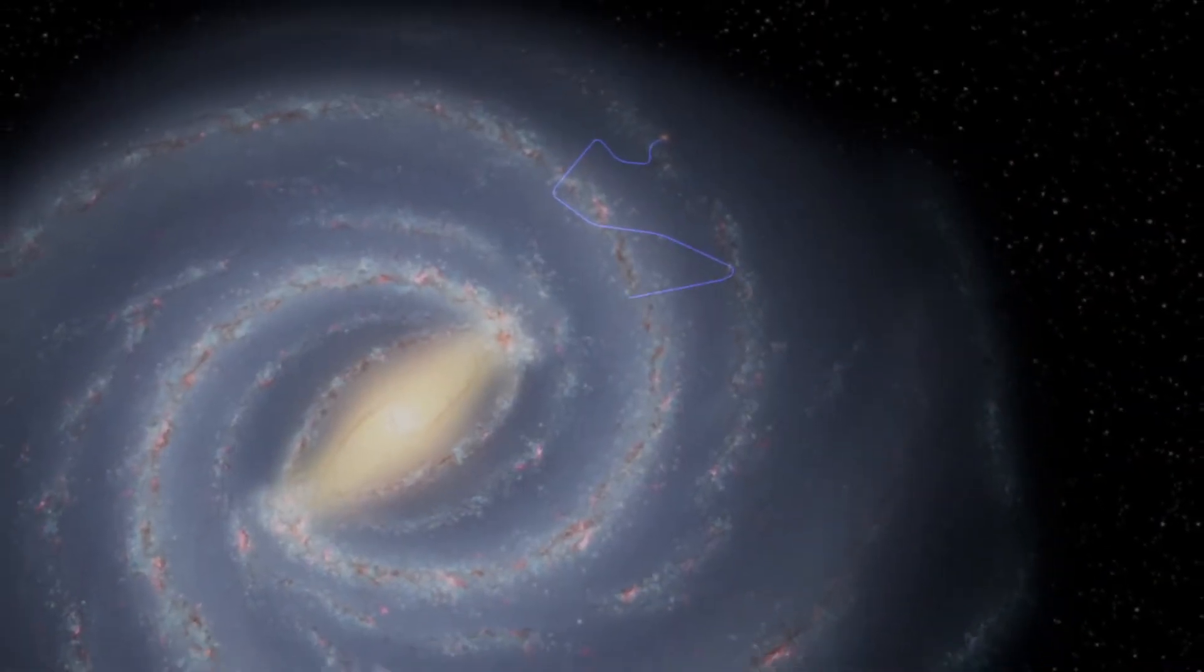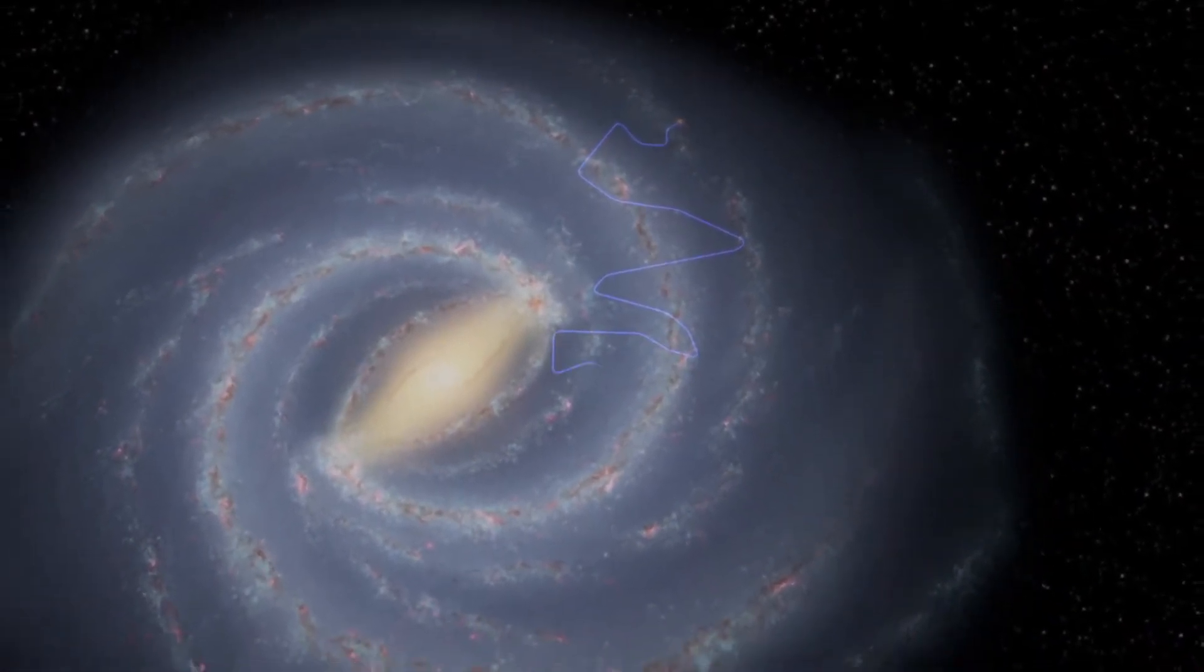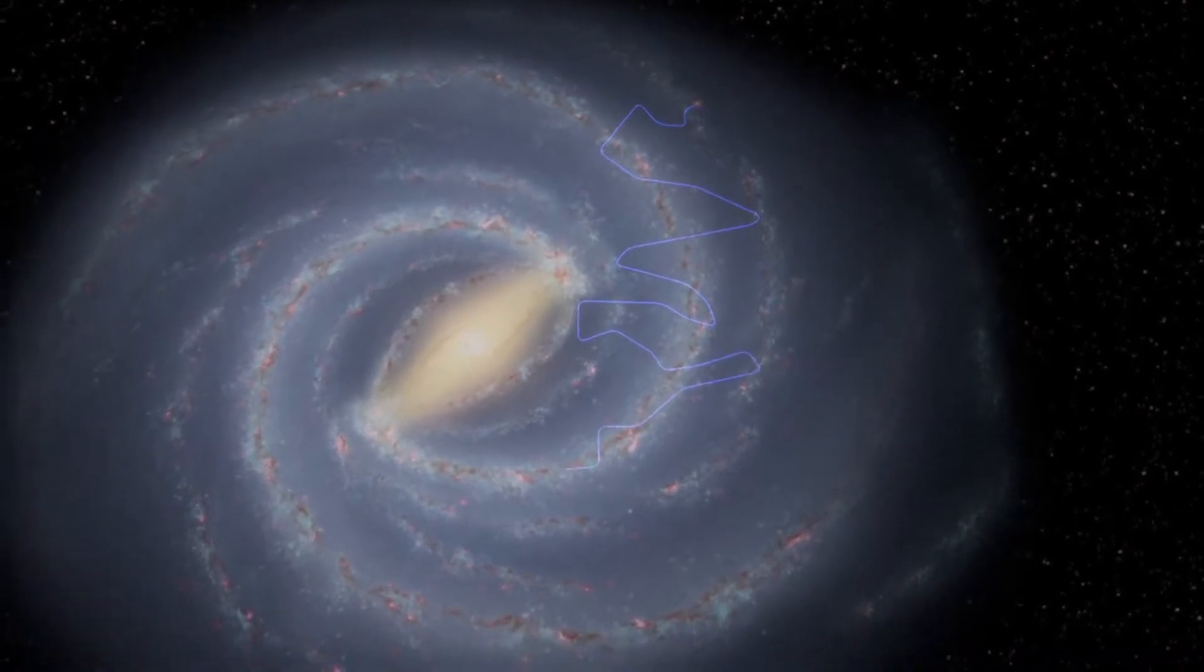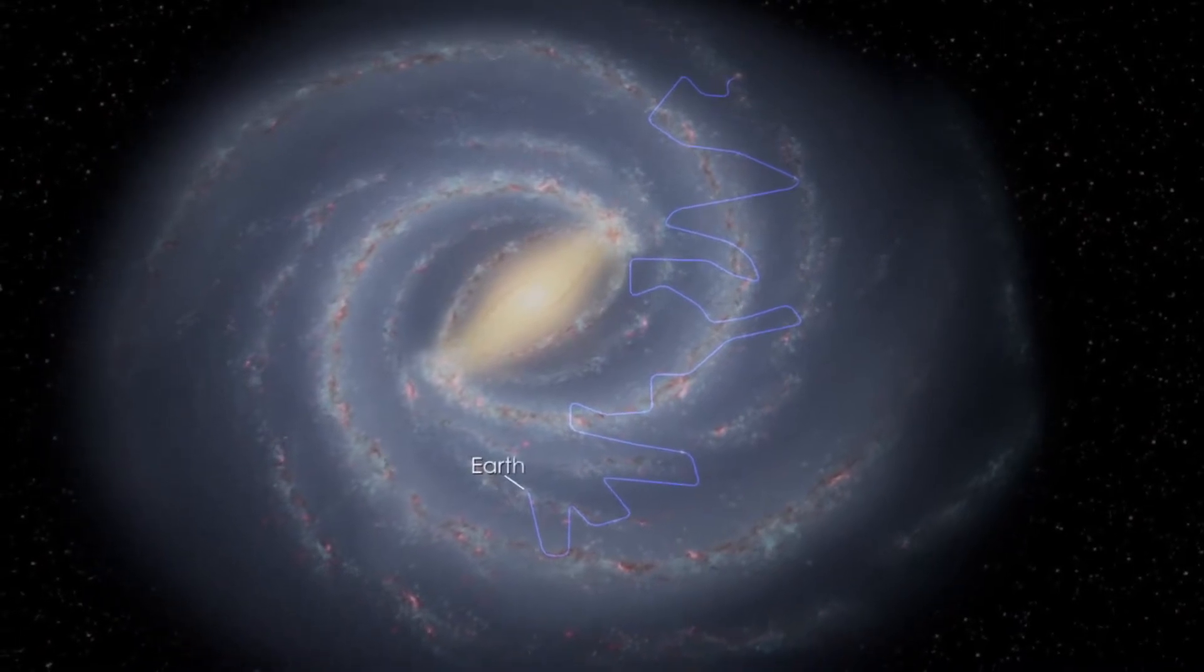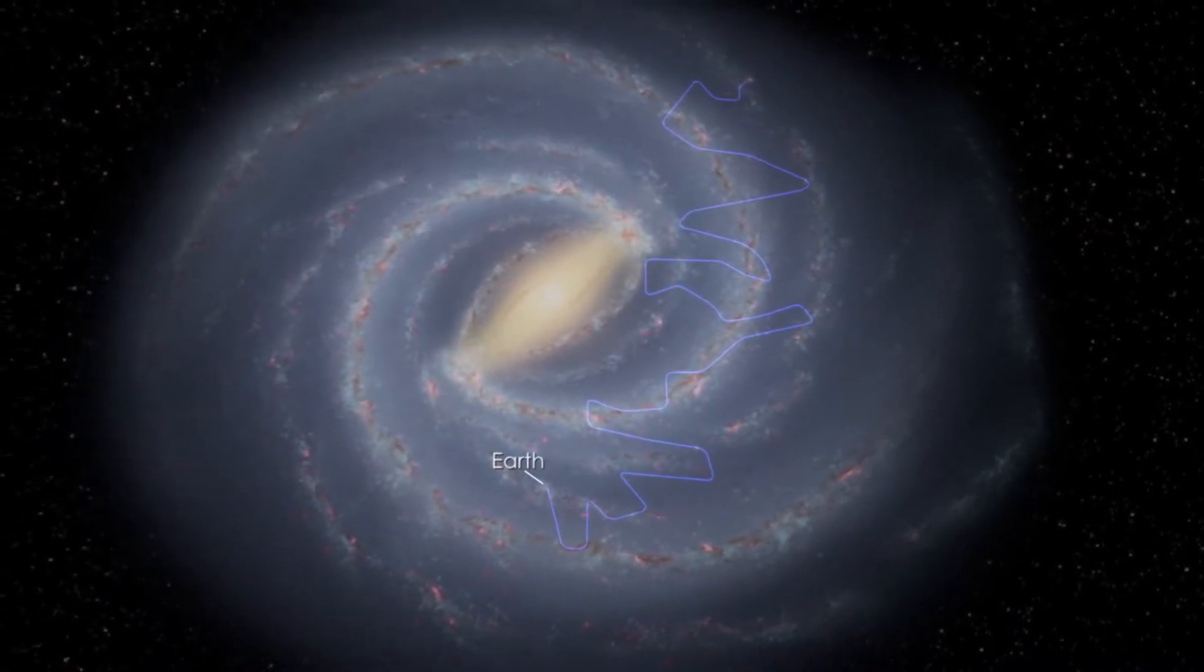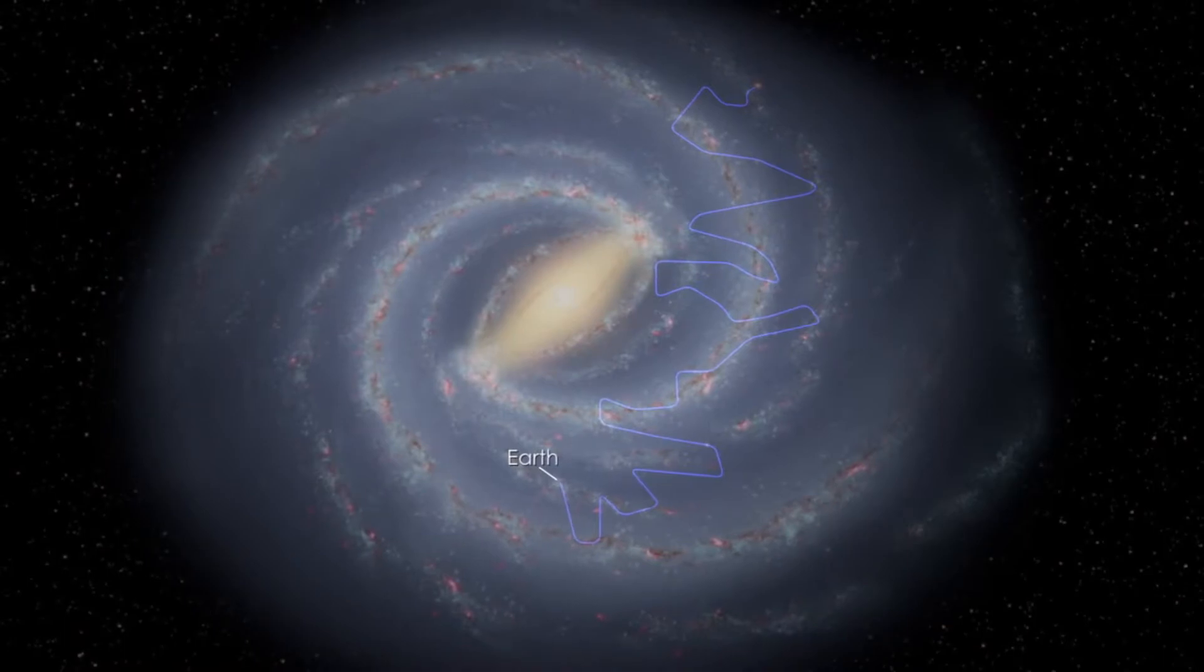Cosmic rays are highly energetic particles that move through space at relativistic speeds and arrive in the Earth's atmosphere from outer space. They're one of our few direct samples of matter that come from outside our solar system.